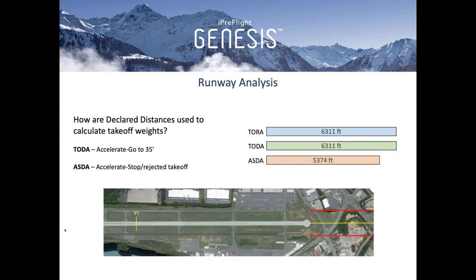How are declared distances used to calculate your takeoff weight? TODA is used in the determination of accelerate-go to 35 feet. ASDA is used in the determination of accelerate-stop. V1 is the airspeed at which you'll either abort the takeoff and stay on the ground or continue the takeoff and lift off even if you lose an engine. APG provides the takeoff weight that allows the pilot to continue the takeoff and meet the required 35 feet above the accelerate-go distance, including obstacle clearance beyond that, and also allows a takeoff weight that permits you to stop safely within the accelerate-stop distance.